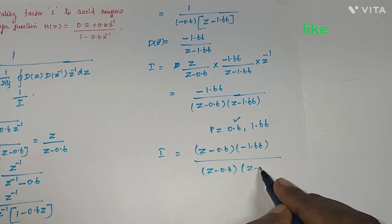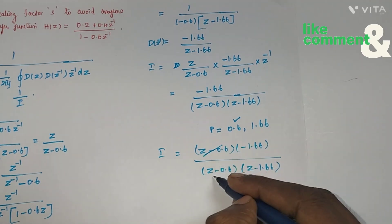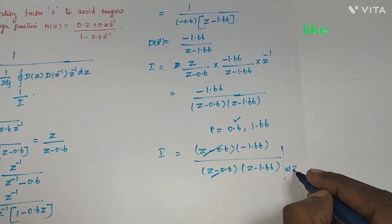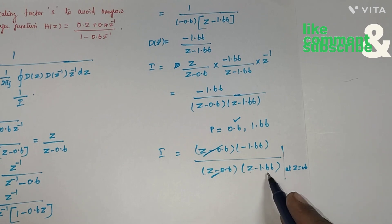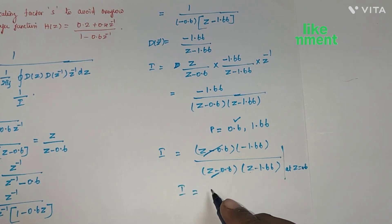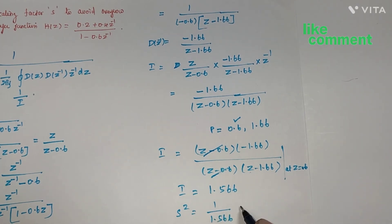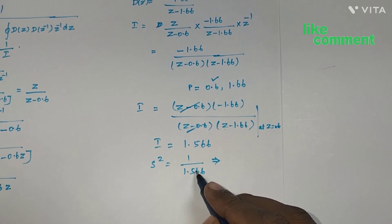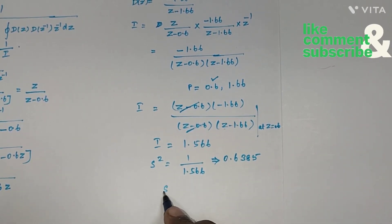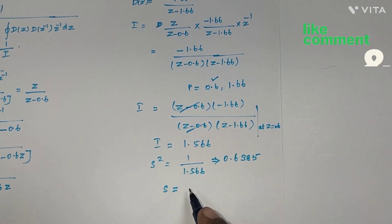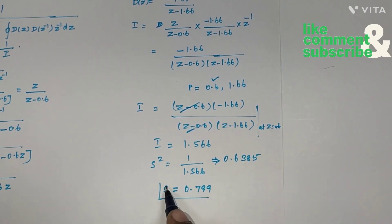Applying residues at z = 0.6: we cancel (z minus 0.6) and substitute z = 0.6, giving 0.6 minus 1.66 as the numerator — a negative value — so I = 1.566. Therefore S² = 1 divided by 1.566 = 0.6385. Taking the square root, S = 0.799. This is the scaling factor for the given transfer function to avoid overflow.